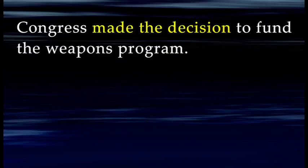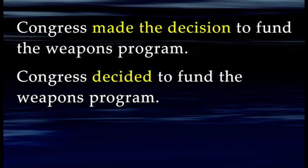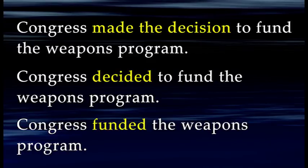Let's look at another one. Congress made the decision to fund the weapons program. This is the same thing — is Congress making something? No, they're really deciding. But here, decide is turned into a noun, decision. So a better way to write that sentence would be: Congress decided to fund the weapons program. Or you could rewrite it as Congress funded the weapons program, eliminating yet another word. Notice the sentence uses more words when the verb is buried as a noun, but it doesn't say anything more. Fewer words is better in academic writing as long as you convey your meaning accurately.